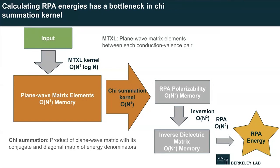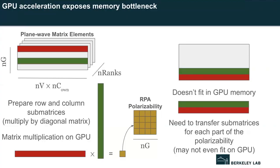Once we've done this massive summation, it's computationally downhill from there. But the size of this plane wave matrix gives us a very large yet simply structured calculation, which presents a great opportunity for leveraging GPU acceleration. To see how this works, we'll dive a bit deeper into the chi summation kernel.